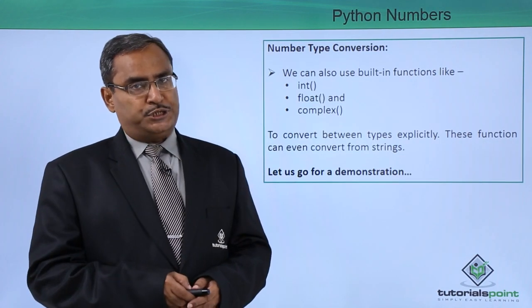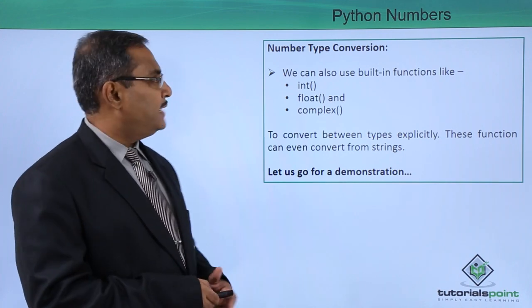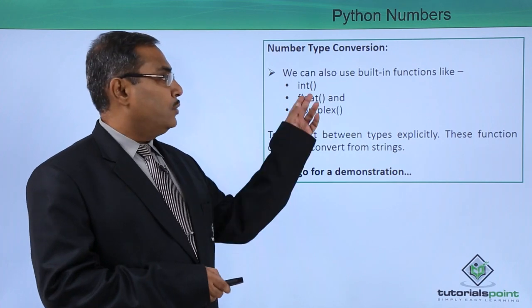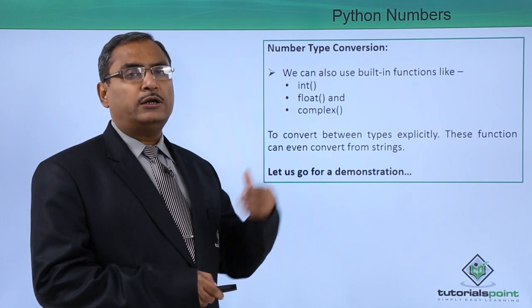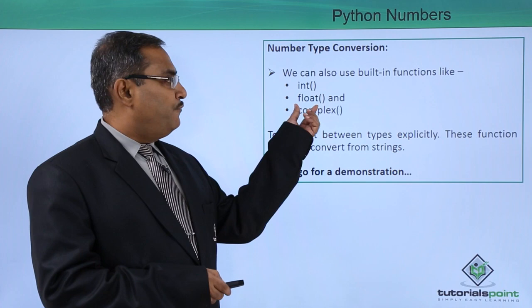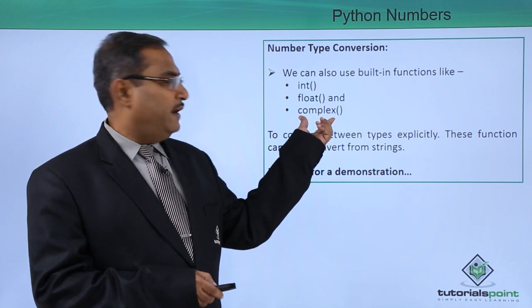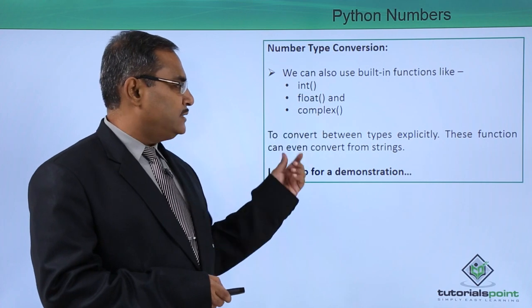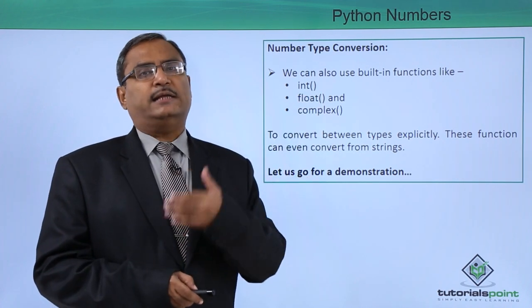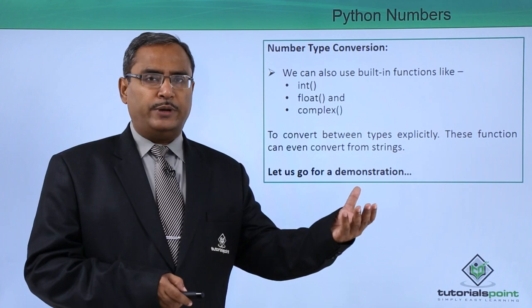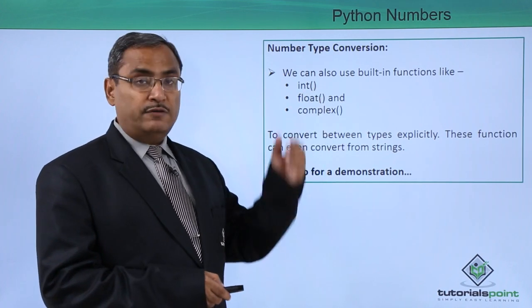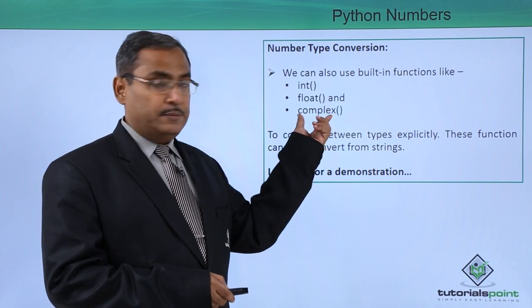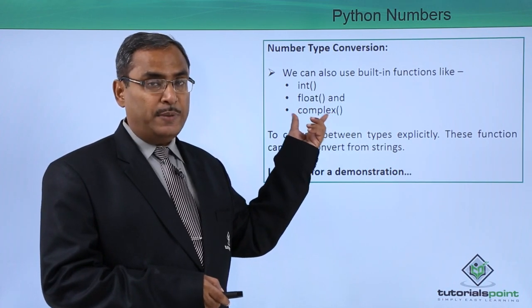For number type conversion from one type to another, we can use built-in functions like int(), float(), and complex() to convert between types explicitly. These functions can even convert from strings — they can take a string as input and convert it to integer, float, or complex number using the respective function.